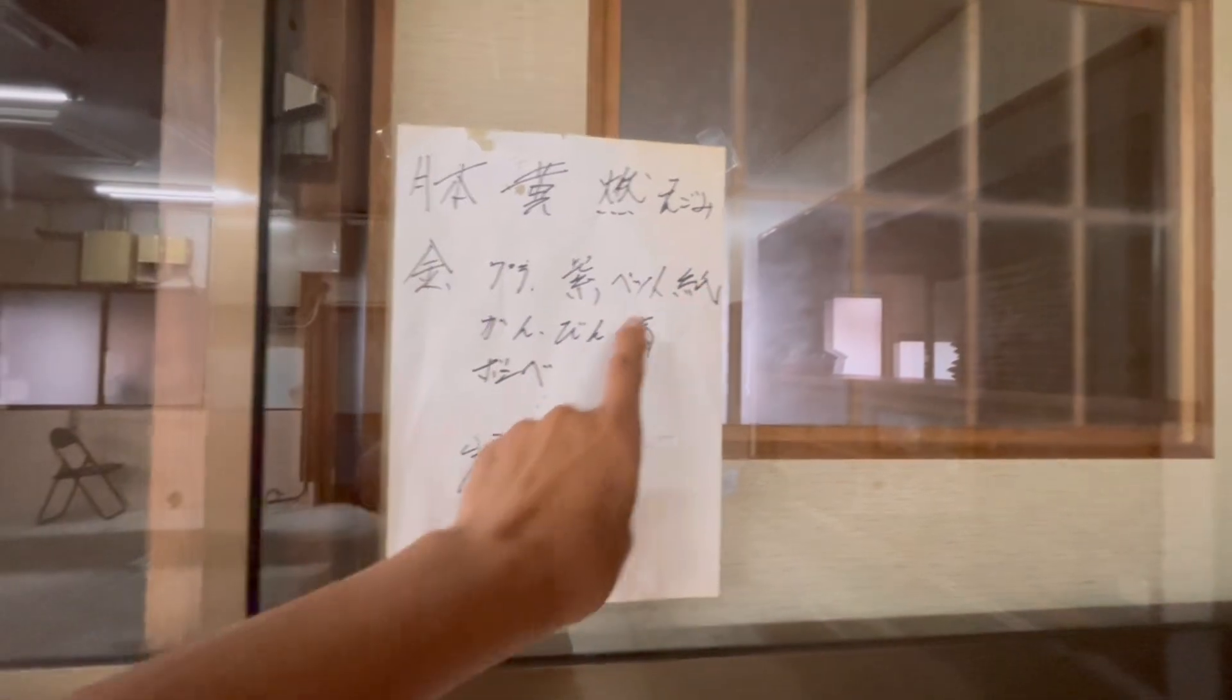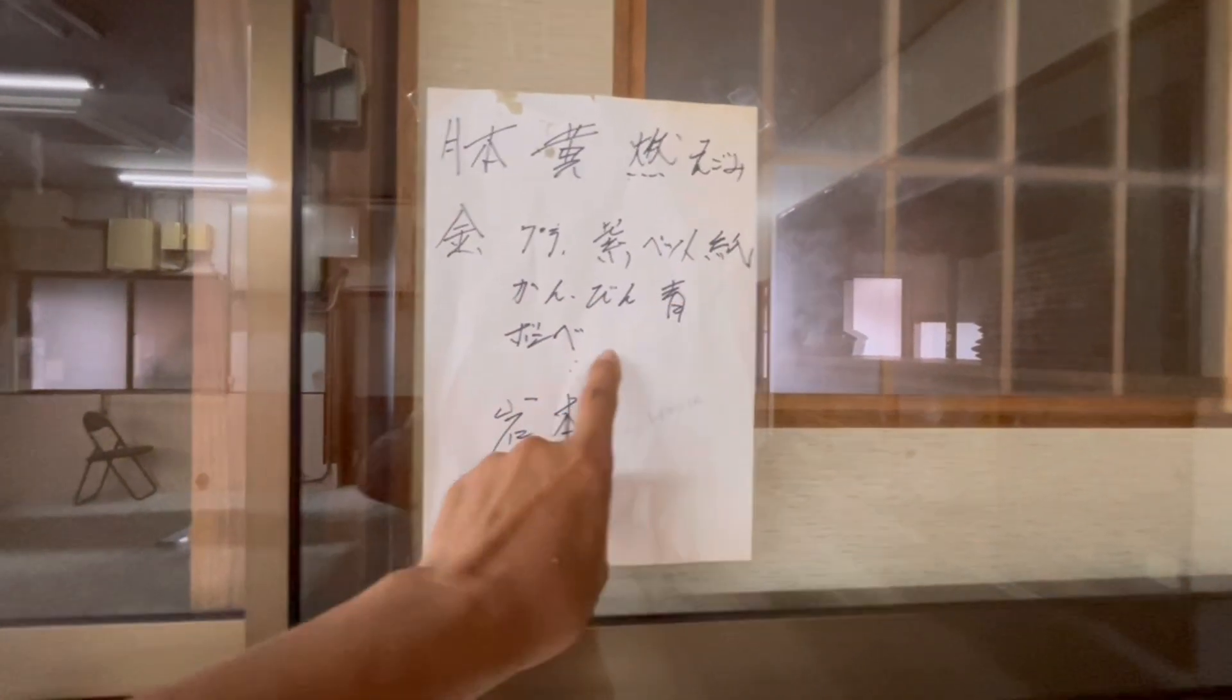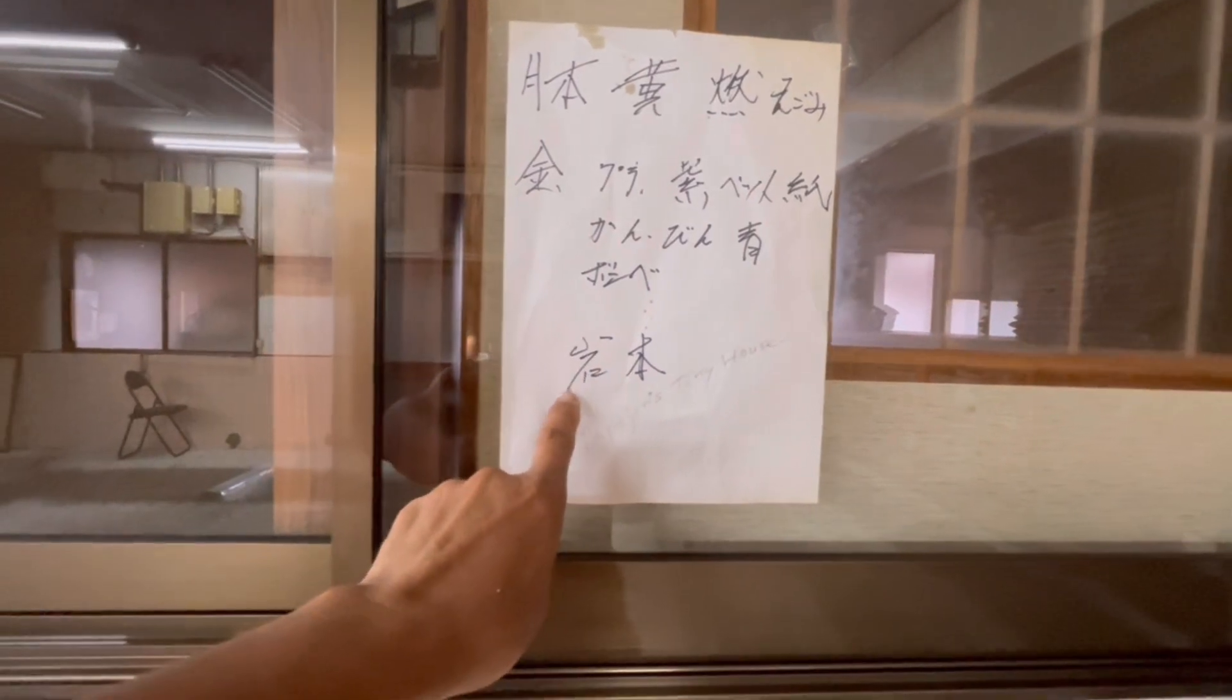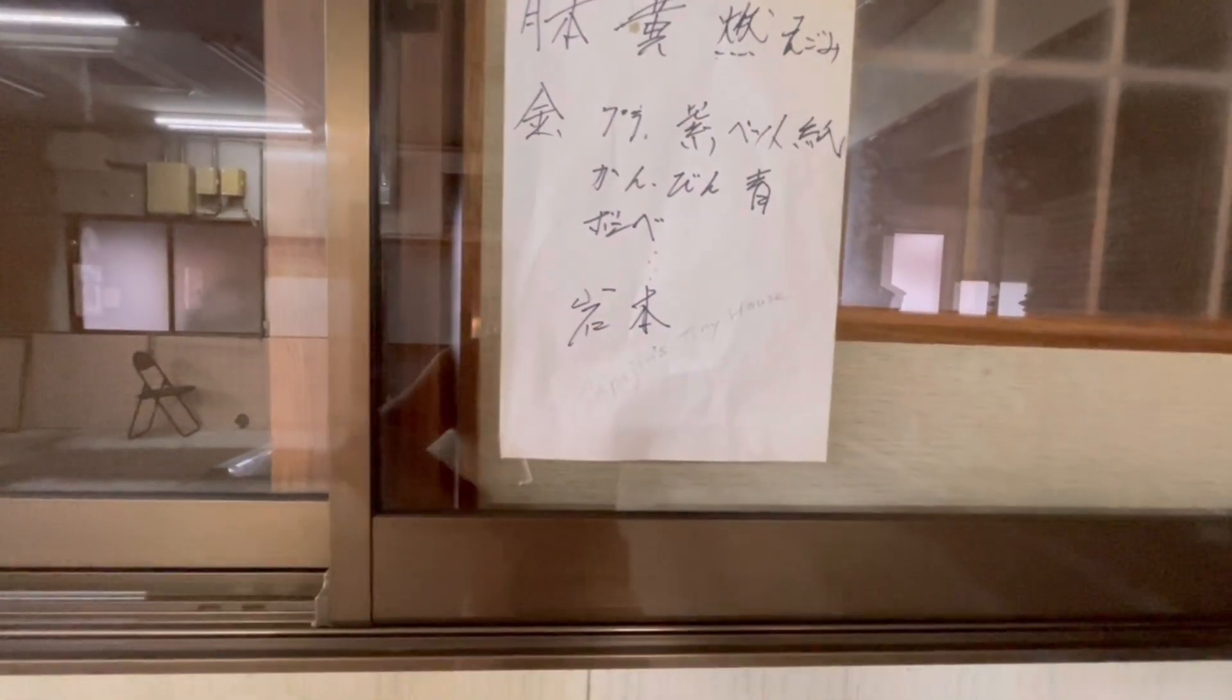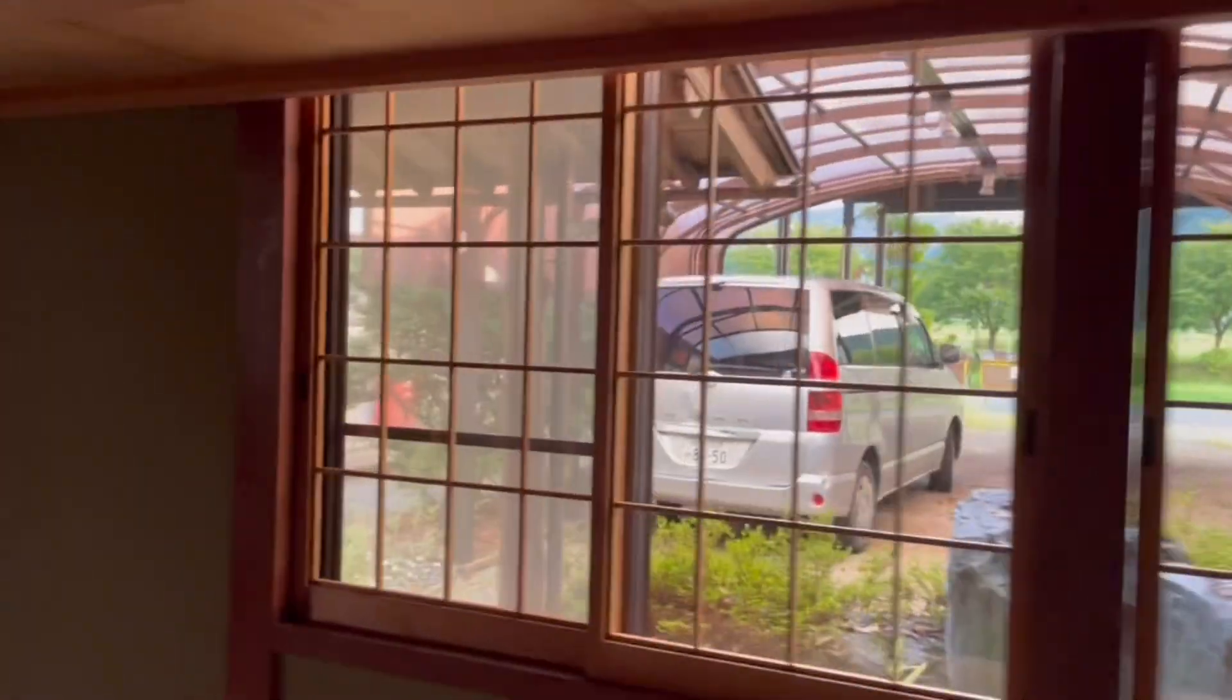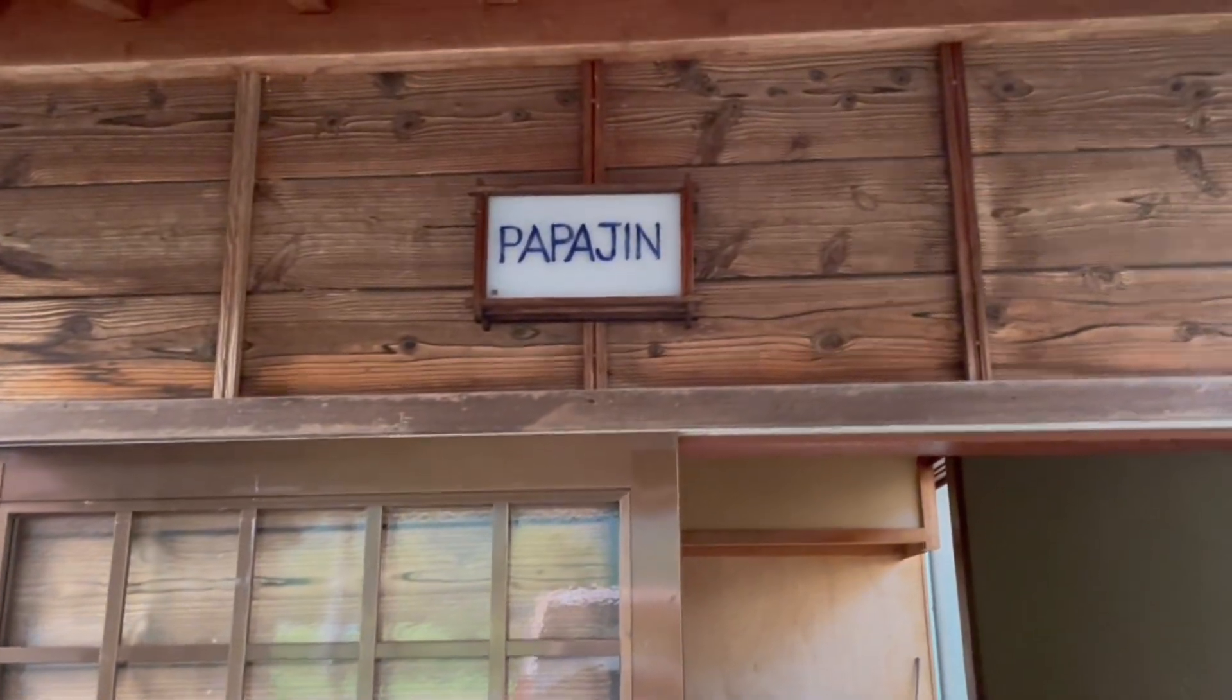This is the trash schedule that a neighbor wrote for me. Monday and Thursday are yellow bags for burnable trash. Friday is purple for plastic, bottles, paper. Blue for cans and bottles. Iwaki-san wrote it. The time is now 6 o'clock. I wrote the name here too: Papajin.